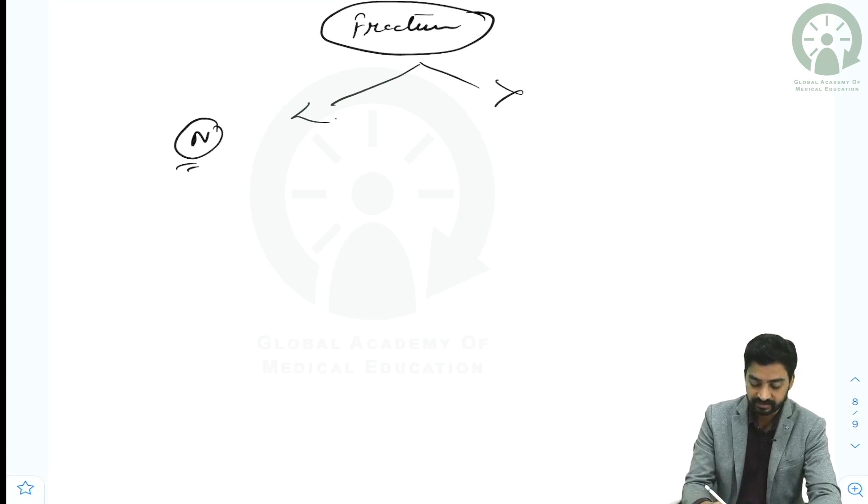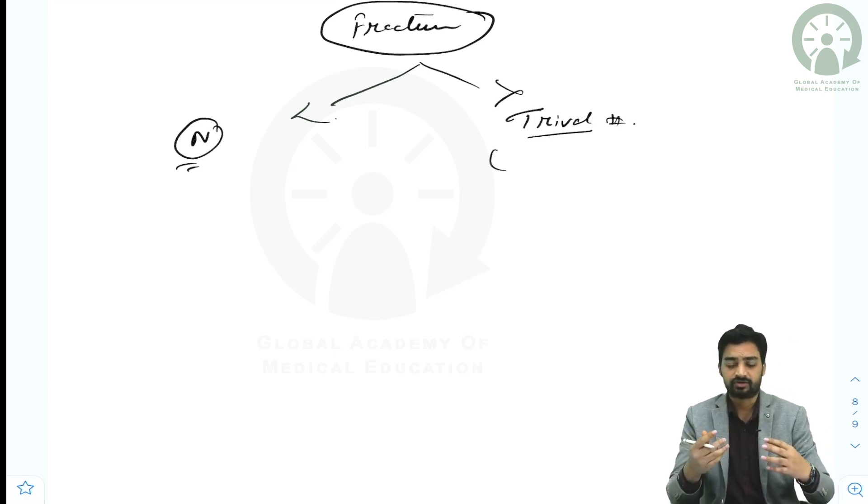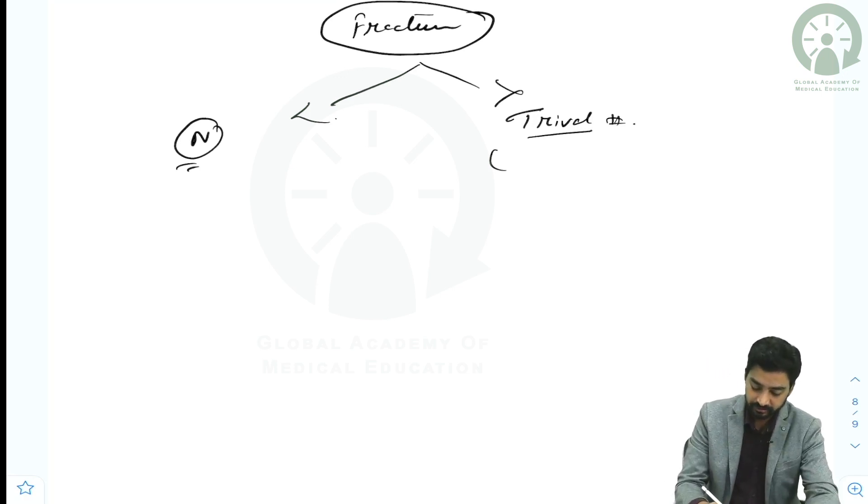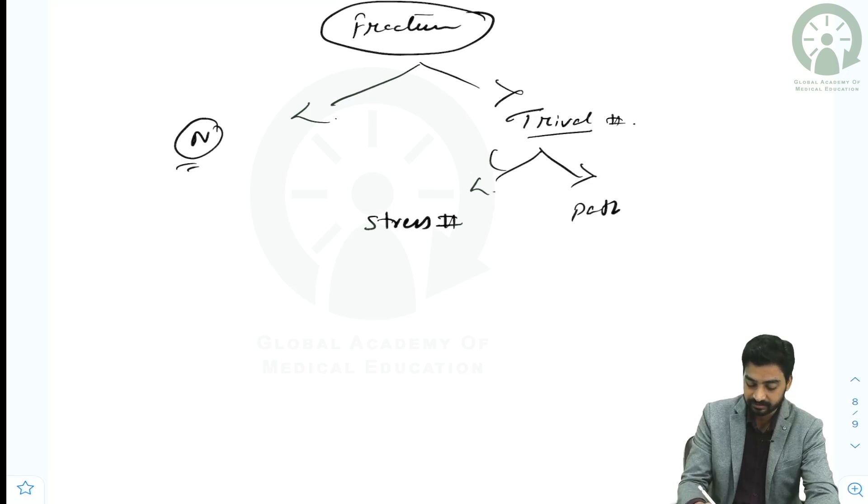Whereas there is another part which is due to trivial fracture, which means the force is not sufficient to break down the bone, but there is a basic problem in the bone integrity - the bone is weakened. The trivial part is again divided into two parts: stress fracture and pathological fracture.